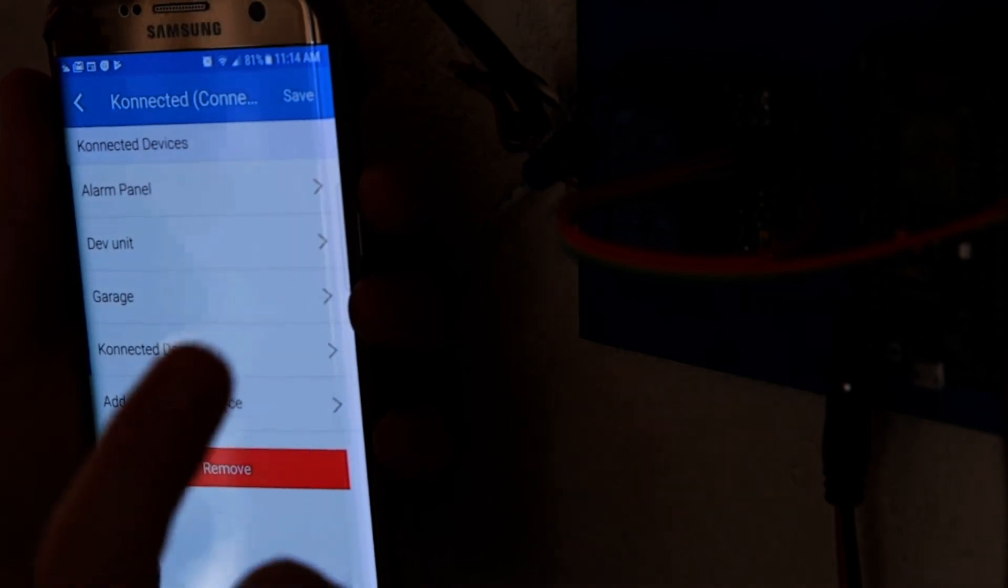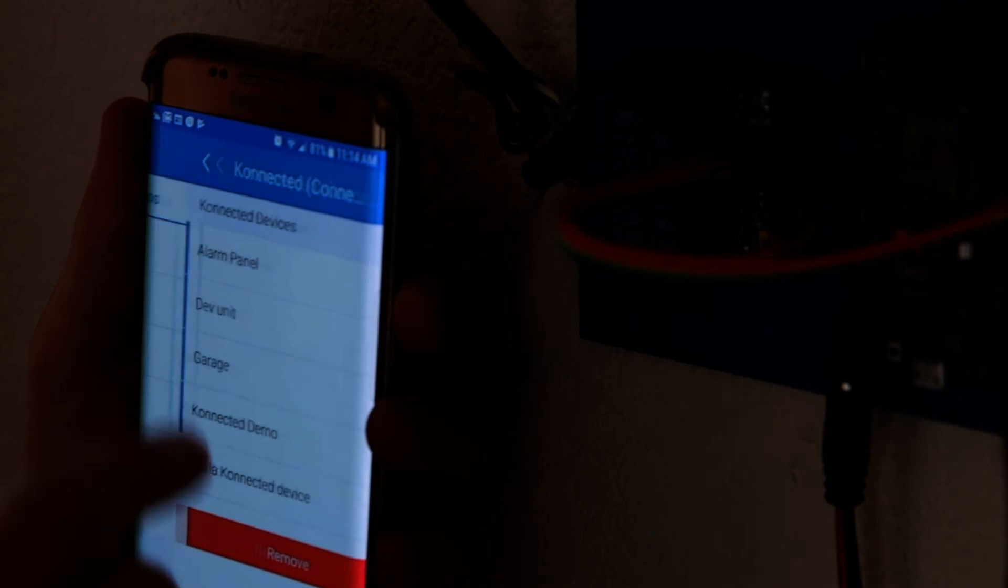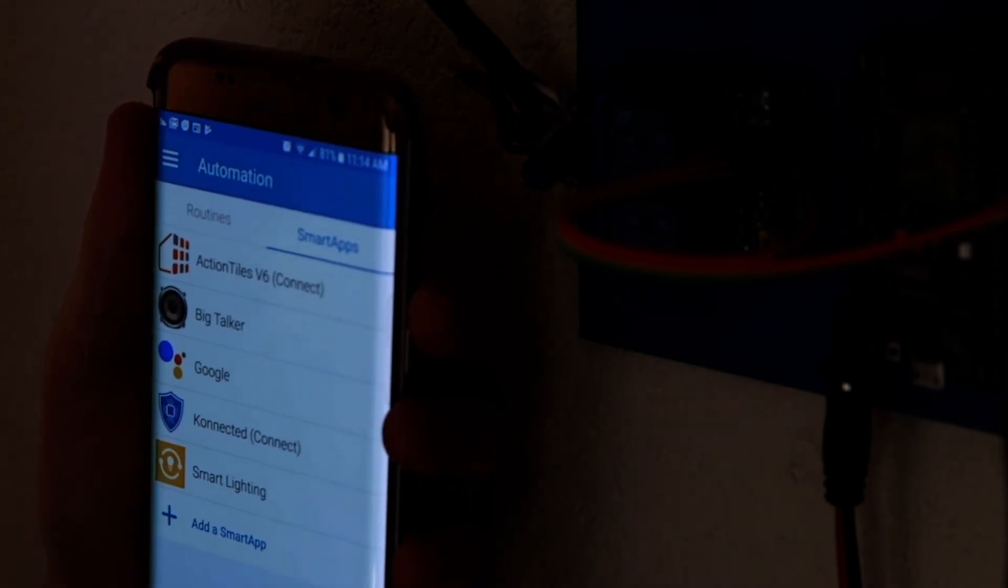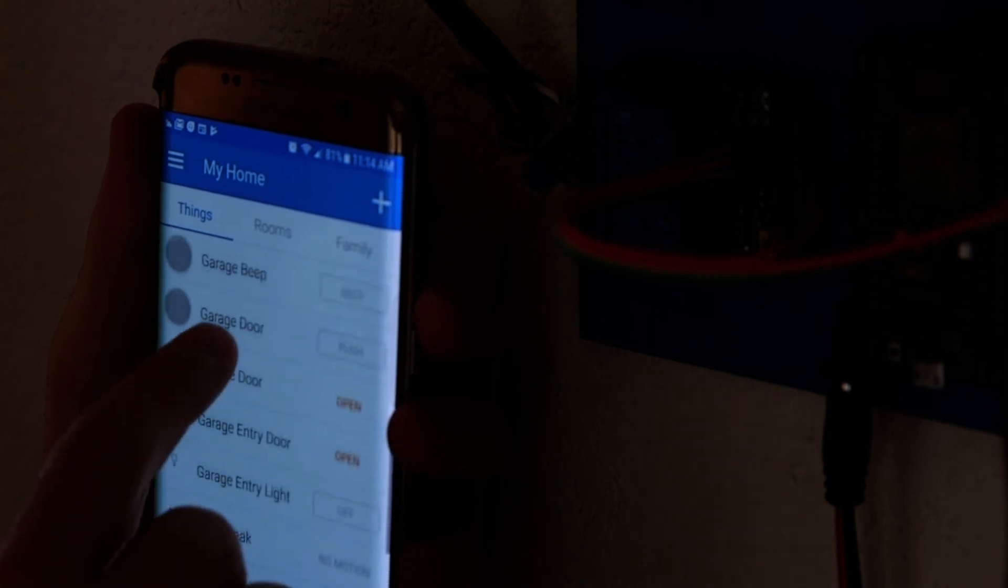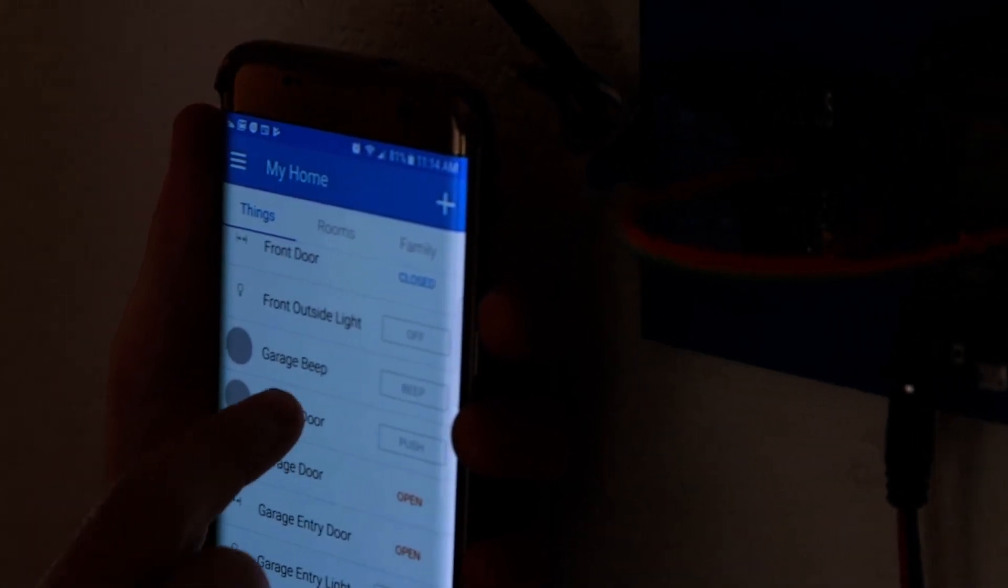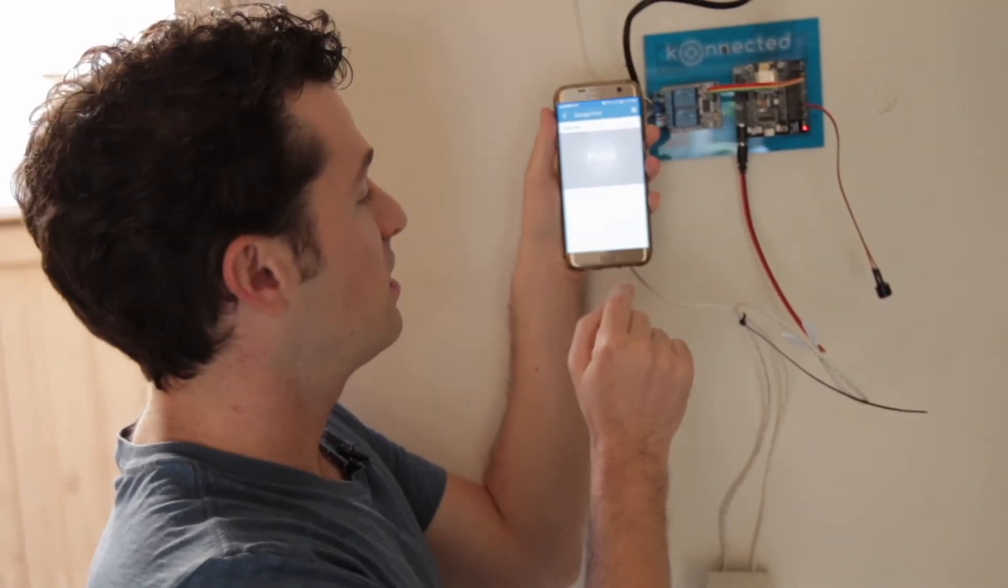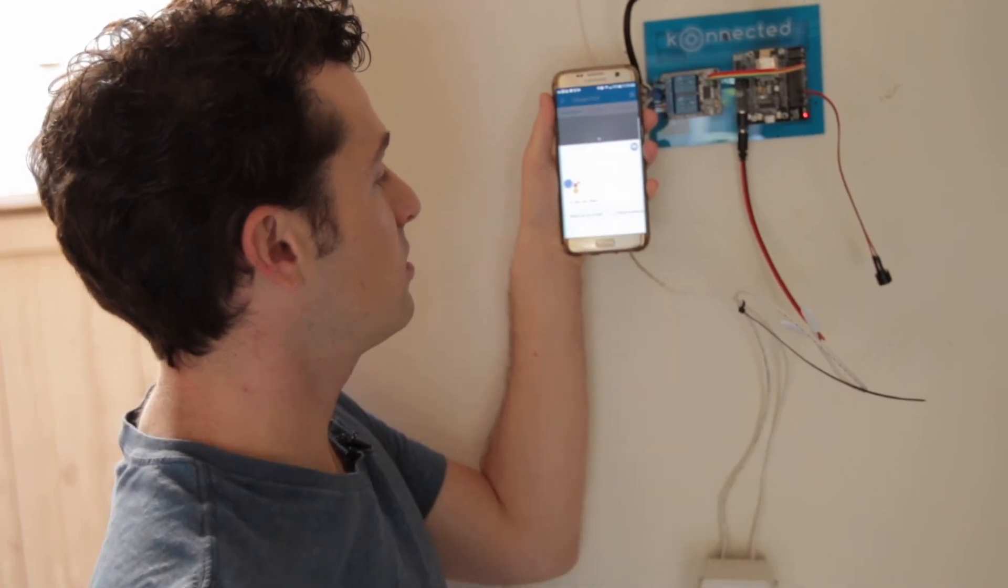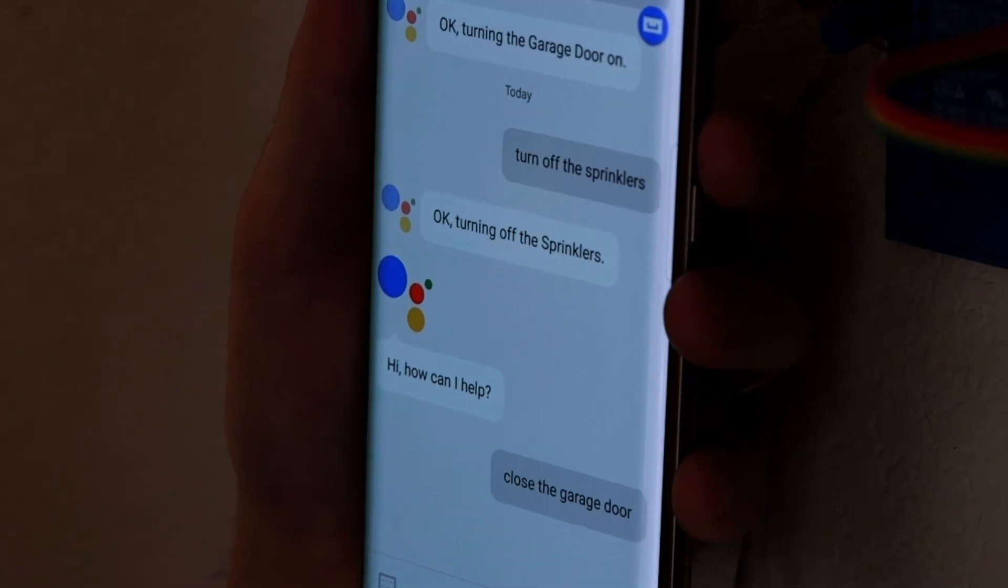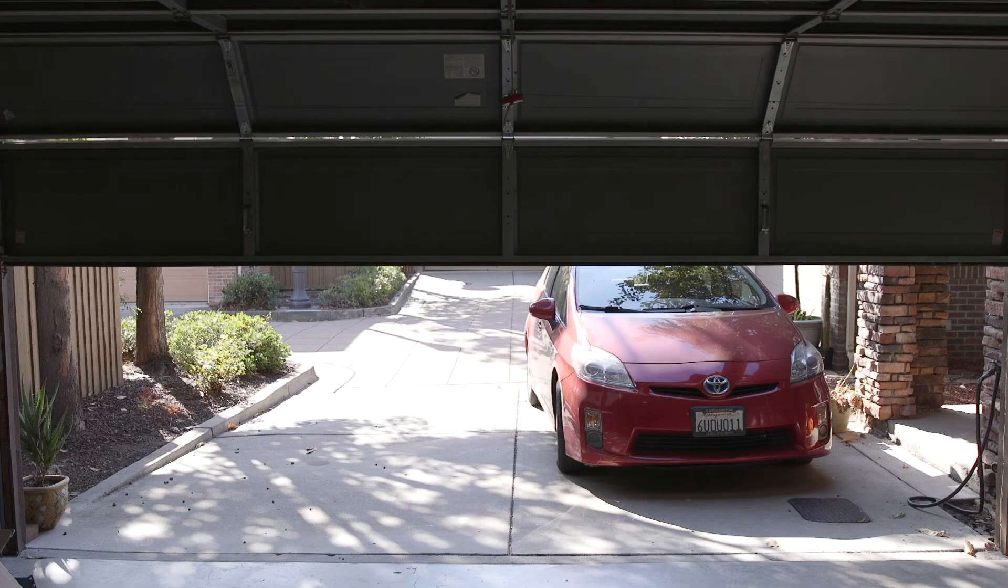And a momentary switch basically means that it just makes a momentary contact of those two wires on the microcontroller trigger. So if I go back to my home I can see my garage door and I can press this to close it. But that's not so much fun. Let's try it with Google Assistant. Close the garage door. And that's all there is to it.